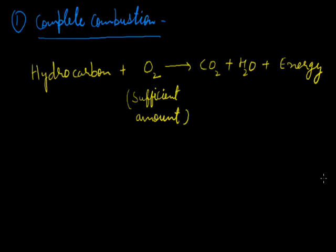When hydrocarbon fuels burn in less amount of air or oxygen — that is, an insufficient supply of air or oxygen — the combustion is known as incomplete combustion. The products of incomplete combustion are carbon monoxide, water, and soot (unburnt hydrocarbons), with the liberation of heat and light energy.